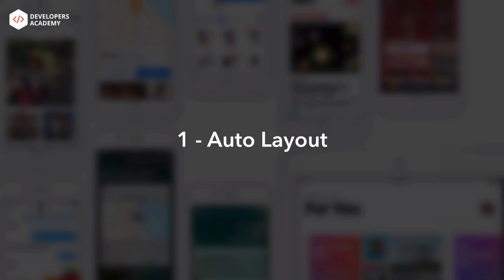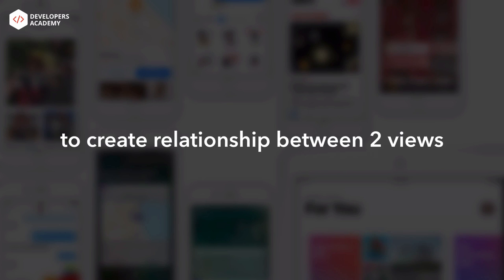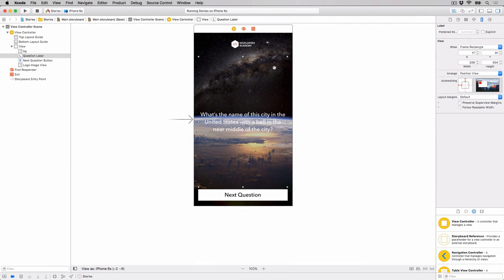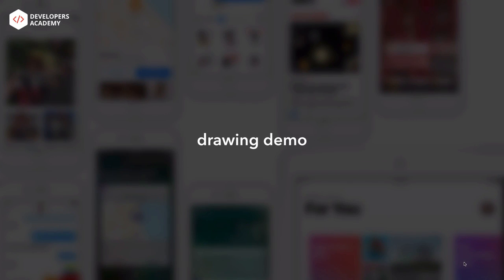The first thing you need to learn is what is Auto Layout — what exactly is it? People see it as a very complicated tool. Obviously it is a very powerful tool, but personally I just think of it as a tool that allows us to define a set of constraints to create relationships between two views in our UI. Auto Layout allows us to create constraints that define relationships between two views. What is a constraint? What is the relationship between two views?